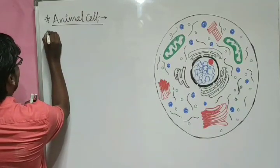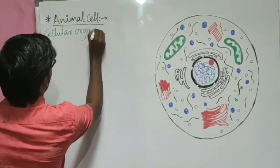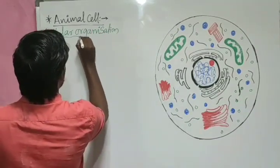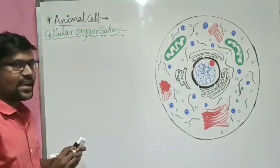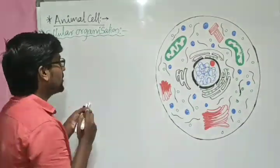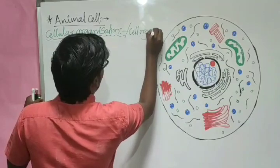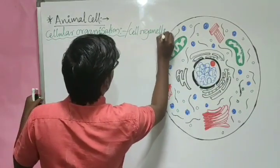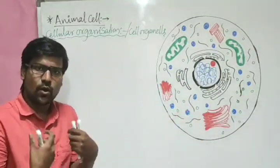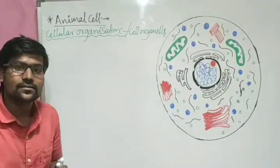Let us consider cellular organization — that means, inside the cell, how the different parts have been organized systematically and what their work is. This is about cell organelles — organs present inside the cell. If I consider the cell as one body, the organs of that body are these organelles. They are small, so we refer to them as cell organelles. We have already studied these organelles, so let me write the list.